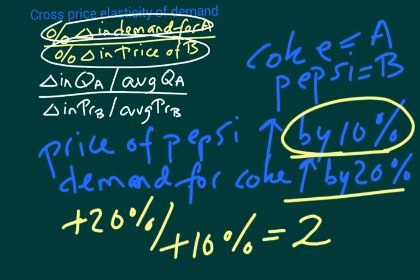If we had not been given the percentages but actual quantities — say the price of Pepsi goes from $1 to $1.20 and the demand for Coke goes from 800 cases to 900 cases — then we would have to plug that into the formula and do the actual change divided by the average change and so forth.